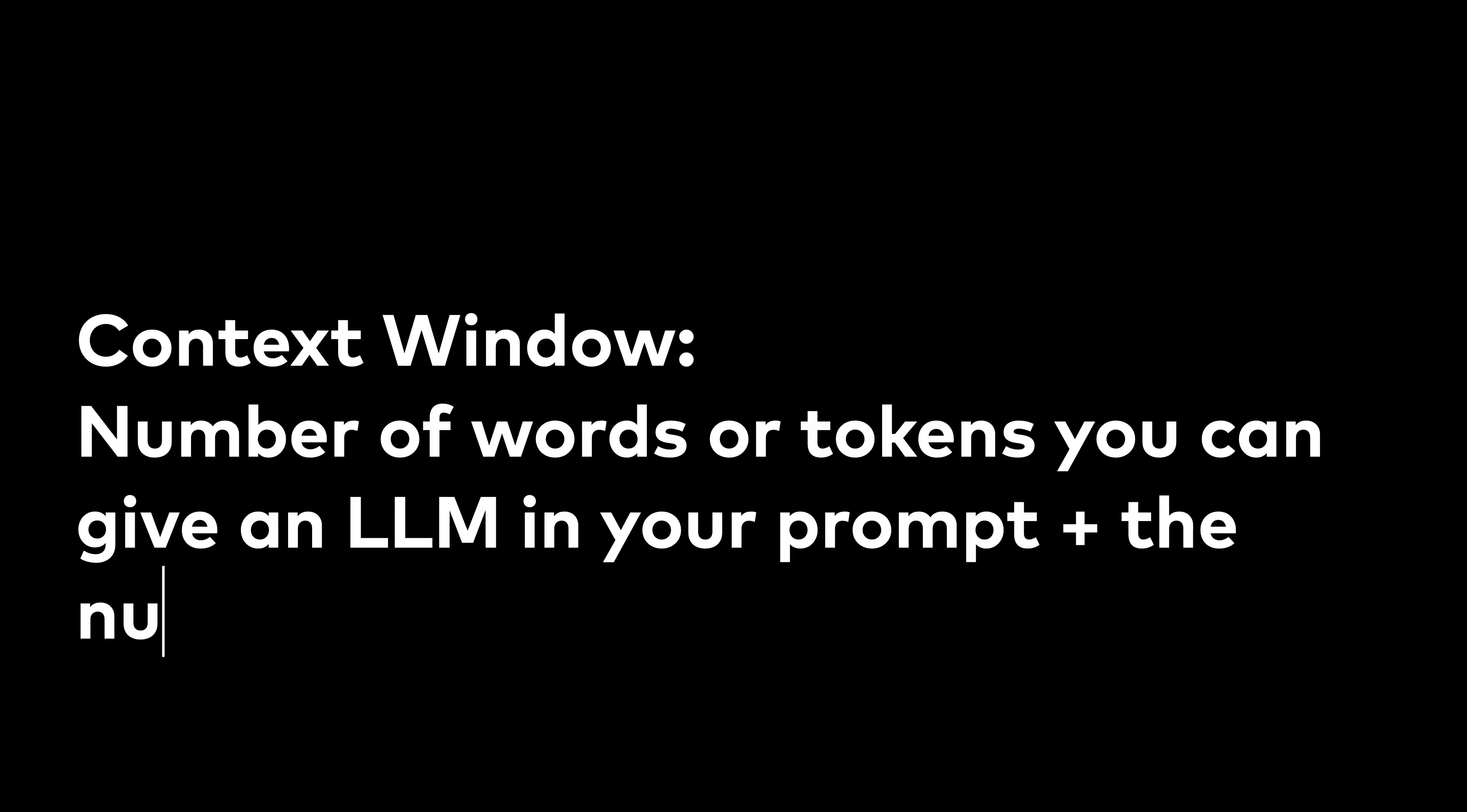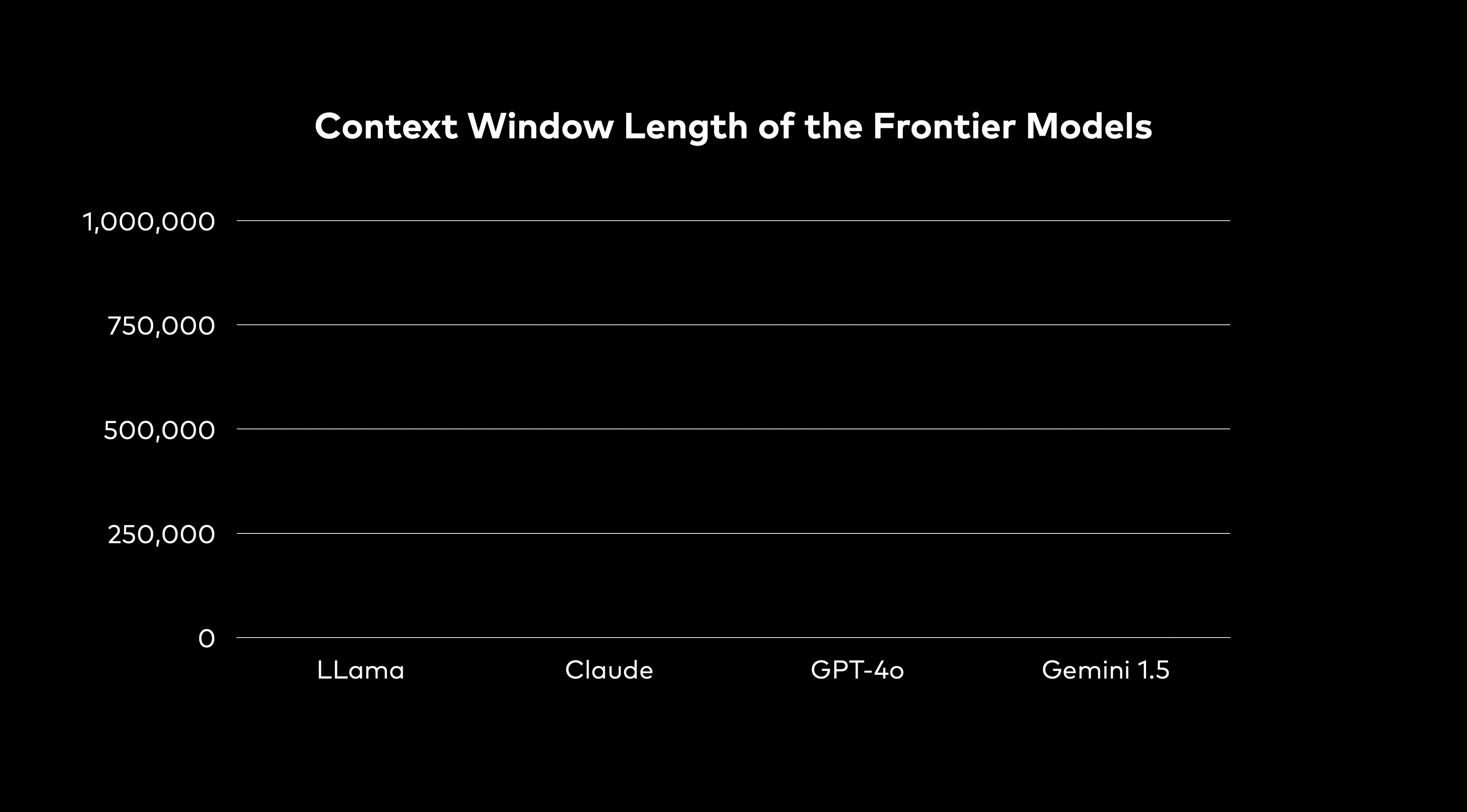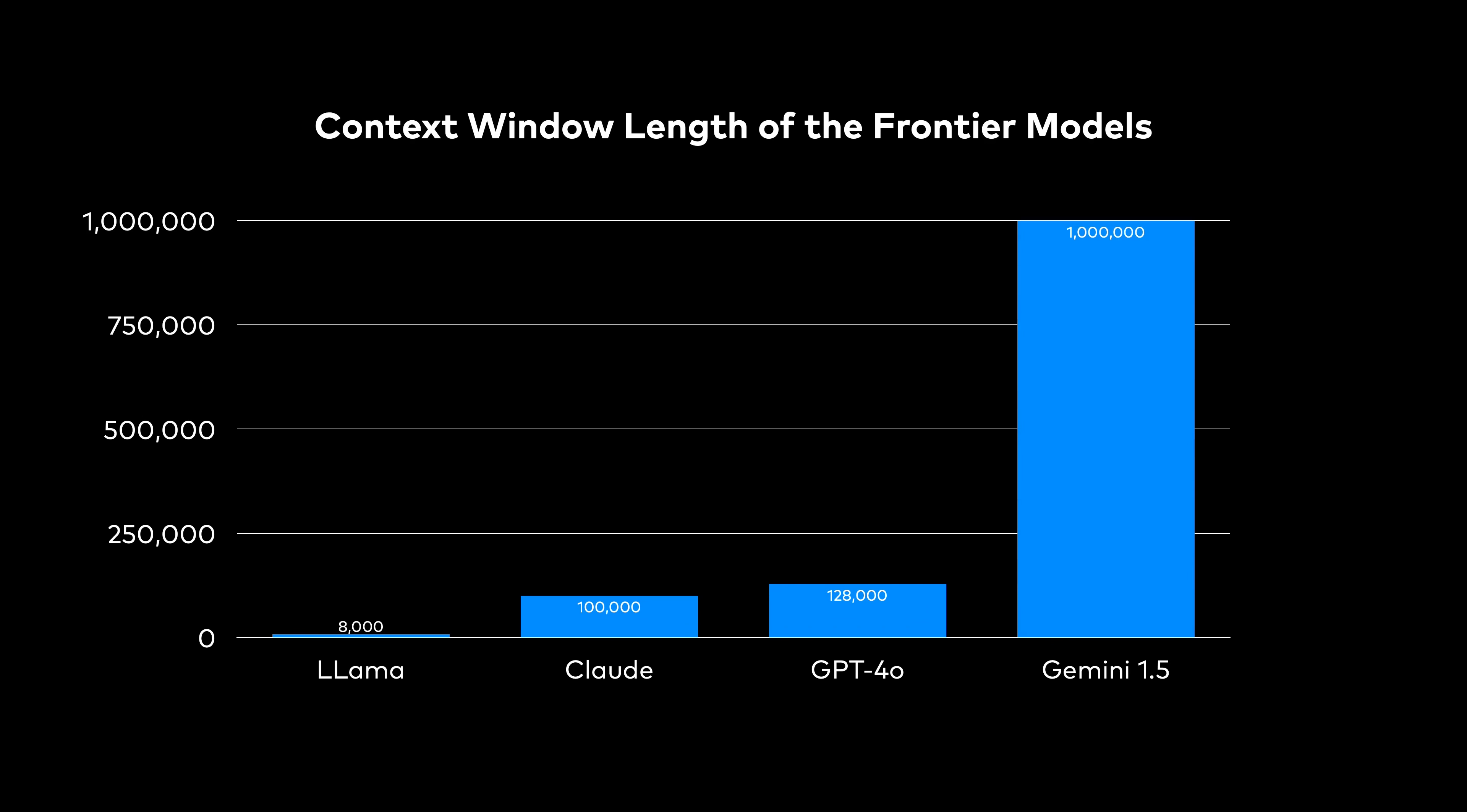It's because the context window of a large language model is limited. So what's a context window? A context window is the number of words or tokens that you can give a large language model in your prompt, combined with the number of words or tokens that it is outputting as a response back to you. And those are typically limited. For example, Llama 3 by default has an 8,000 token context window. Even the frontier models like GPT-4o have a 128,000 token context window.